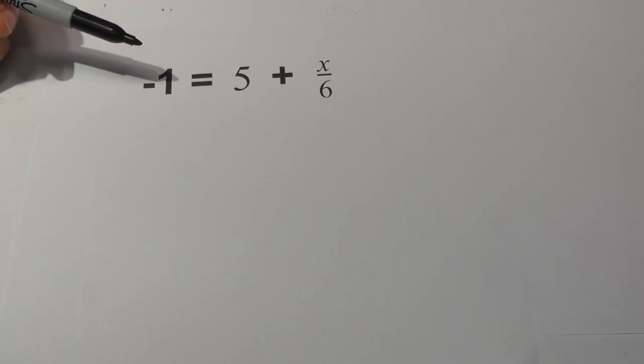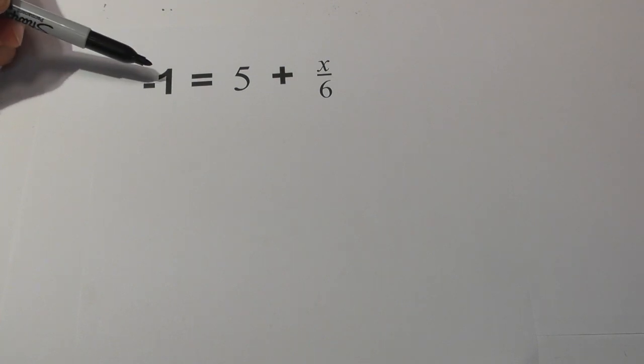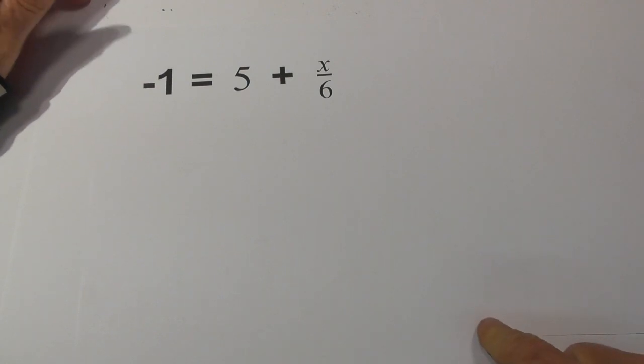Welcome to Moomoo Math and Science. In this video, let's solve negative 1 equals 5 plus x over 6. In this two-step equation, we have a negative number and we have a fraction. So let's get started.